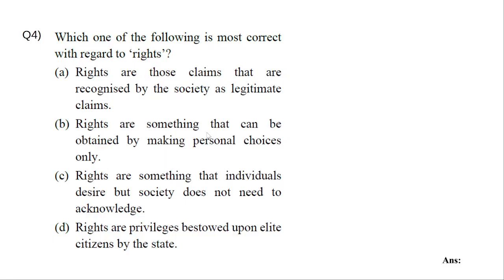This is a tricky question, but you have to remember this very clearly — if such a question comes, you should not get confused. It is easy to think that if it is your fundamental right you can do whatever you want. Option B — rights bestowed upon elite citizens — is definitely wrong, because our constitution provides for equality of everyone, equality of law, and equal protection of laws. There is no concept of some citizens getting more privileges. Option C — rights are something that individuals decide and society does not need to acknowledge — that is also wrong, because the society has to recognize them as legitimate rights. Those only become the rights of citizens.